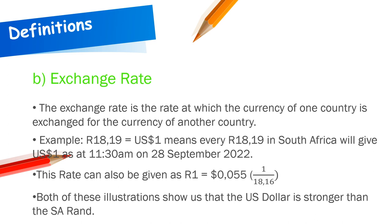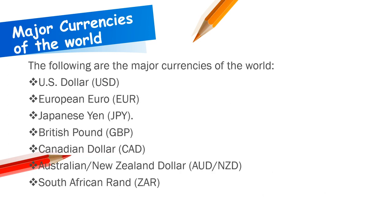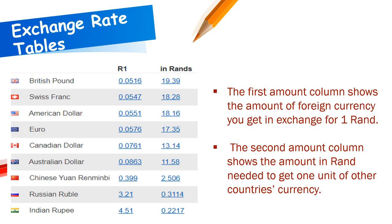Both illustrations show that the US dollar is stronger than the South African rand. The major currencies of the world include the US dollar, the euro, the British pound, Japanese yen, Canadian dollar, and the South African rand. Now let's look at exchange rate tables — there are two columns, which I need to explain.